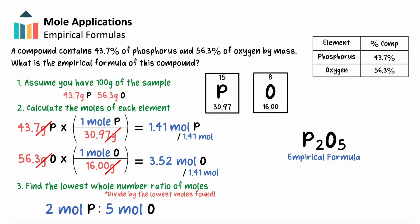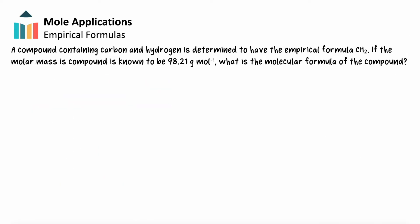We can go one step further from the empirical formula if the molar mass of a compound is known. For example, a compound containing carbon and hydrogen is determined to have the empirical formula CH2. If the molar mass of the compound is known to be 98.21g per mole, what is the molecular formula of the compound?